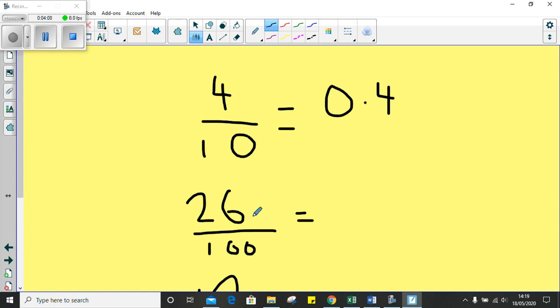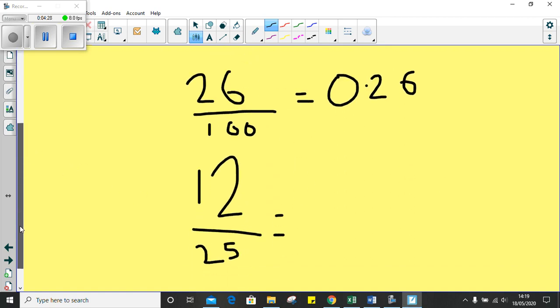When we're converting 26 hundredths, because we've got 100 underneath there, we know we're dealing with two decimal places. So we're going to have 0.26. So when we've got 10, we've got one decimal place, and we've got 100, two decimal places.